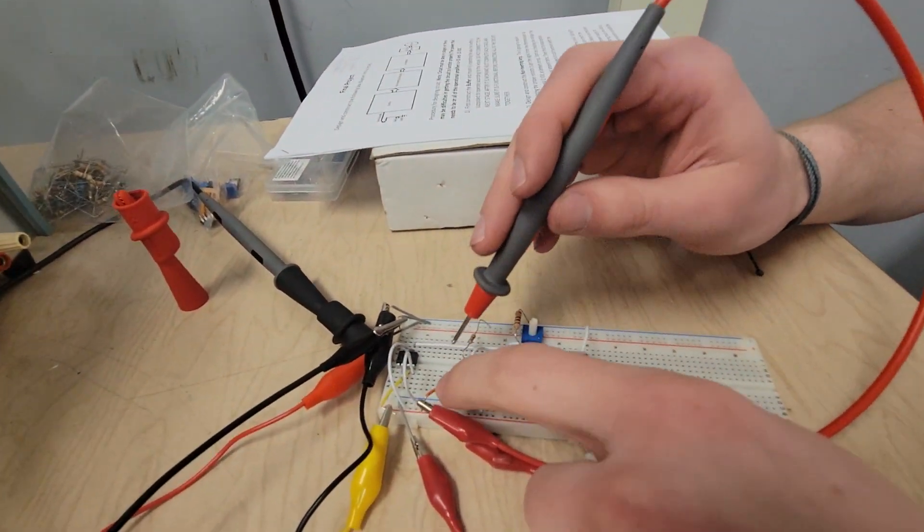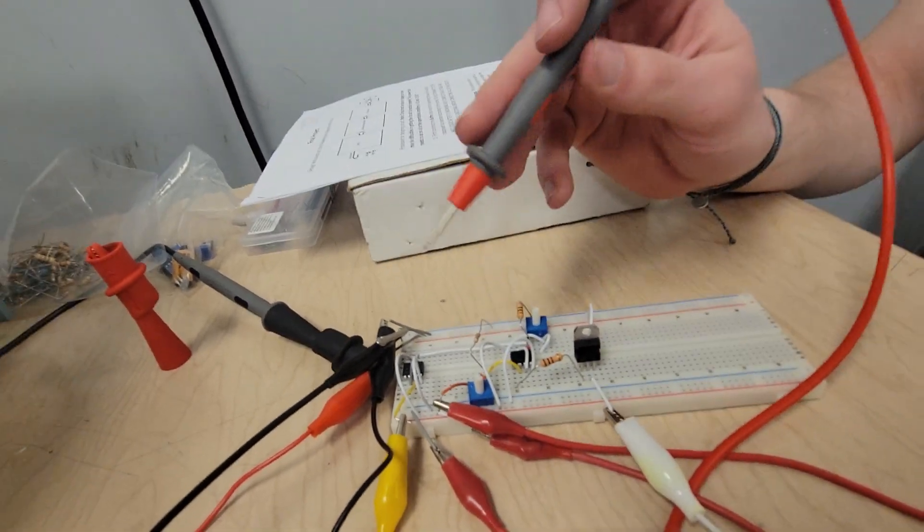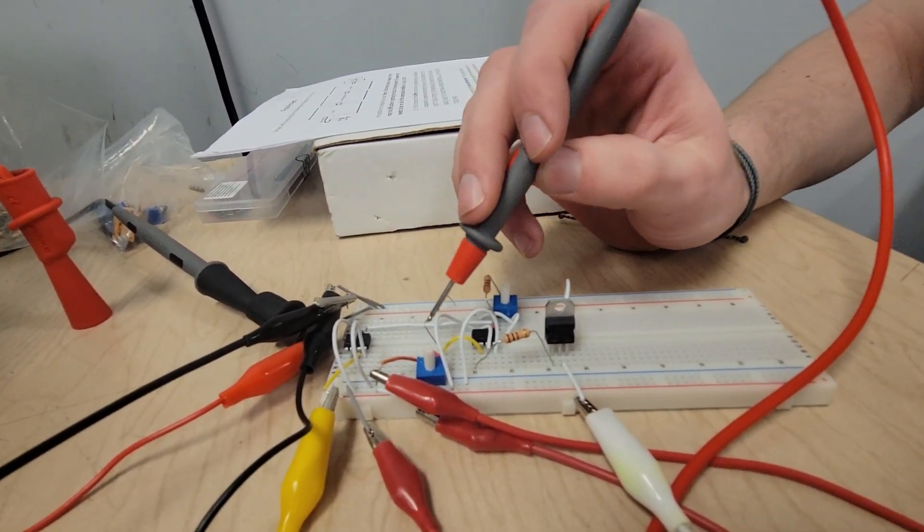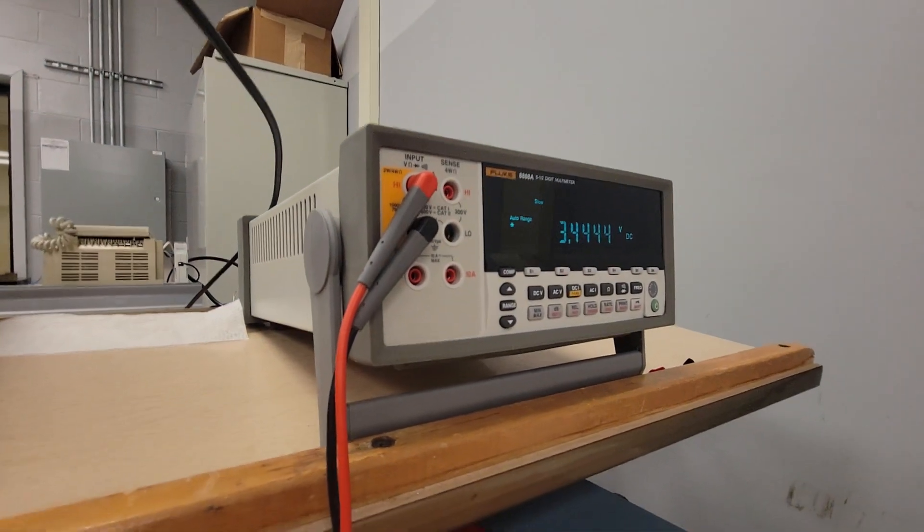And then over here we have our voltage divider with the potentiometer, just so we can adjust it to get the right voltage. And coming out of that give us about 3.5.